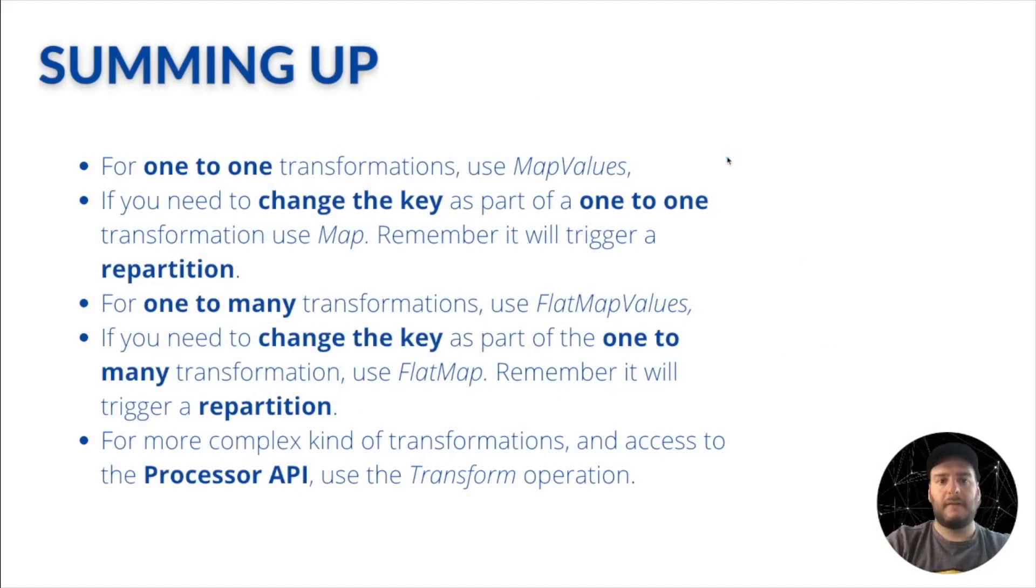So to sum up, for one-to-one transformations you have to use map values, unless you need to change the key as part of the transformation. Then you should use map. But remember, it will trigger a repartition. Now, if you want to do a one-to-many transformation, then you have to use flat map values. Again, unless you want to change the key as part of the transformation, then you have to use flat map, remembering that it will also trigger a repartition.